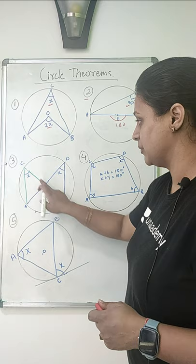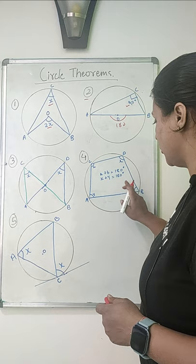The 4th law is: in a cyclic quadrilateral, the sum of opposite angles is 180 degrees. So a plus b is 180, x plus y is 180.